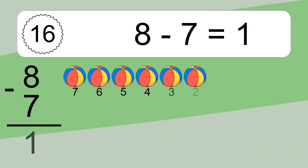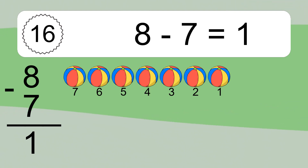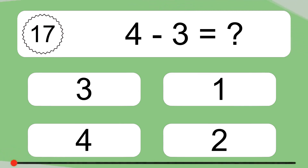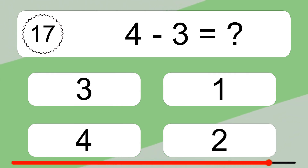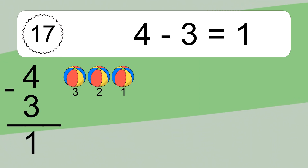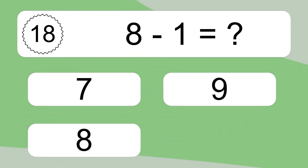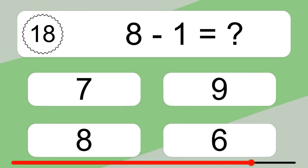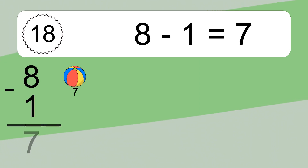8 minus 7 equals 1. Let's count it: 7, 6, 5, 4, 3, 2, 1. 4 minus 3 equals what? 4 minus 3 equals 1. Let's count it: 3, 2, 1. 8 minus 1 equals what? 8 minus 1 equals 7. Let's count it: 7.